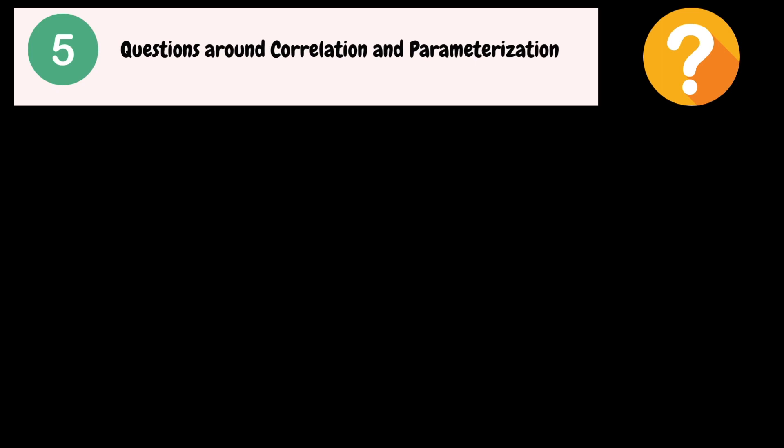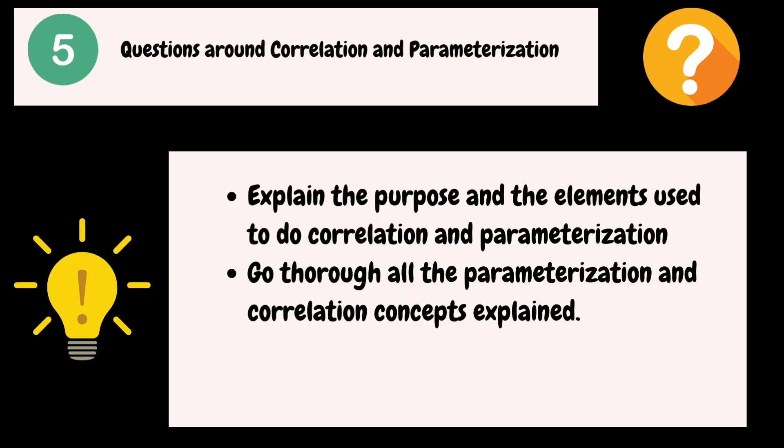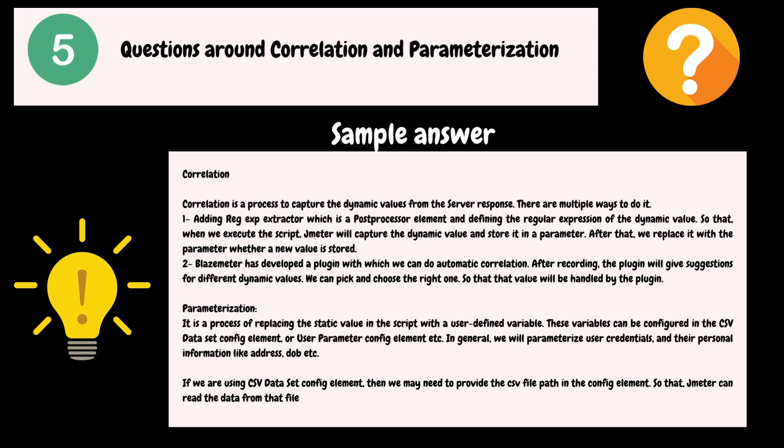In the interview, there may be some questions related to correlation and parameterization concepts. You need to understand the question and explain the purpose of the concept in one or two sentences, and the respective elements you have used in JMeter. Here is a sample answer for correlation: Correlation is a process to capture the dynamic values from the server response. One approach is adding a Regular Expression Extractor, which is a post-processor element, and defining the regular expression of the dynamic value so that JMeter captures it and stores it in a parameter, which then replaces the dynamic value.